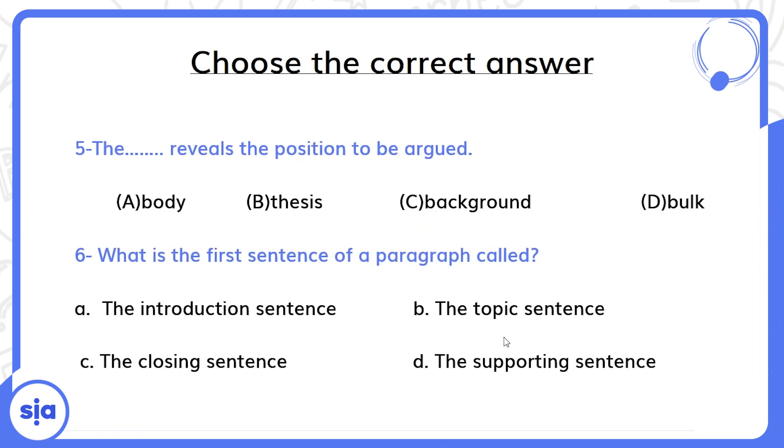Number five: the blank reveals the position to be argued. Where in the essay do I talk about my position or opinion on the topic? Yes, in the thesis statement, which is the sentence at the end of the introduction. Number six: what is the first sentence of a paragraph called? I'm talking about body paragraphs. What is the first sentence of any paragraph called? It's called the topic sentence.